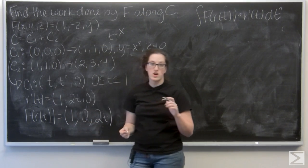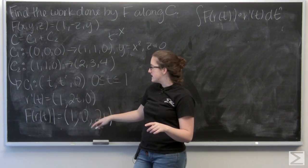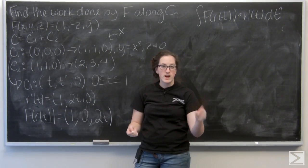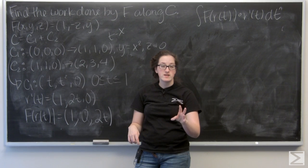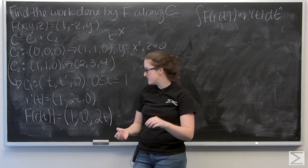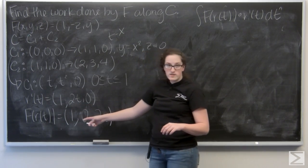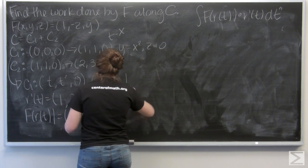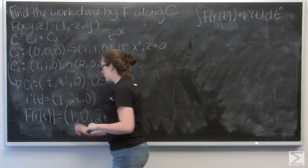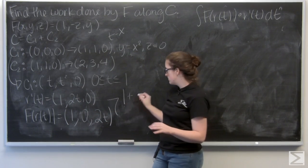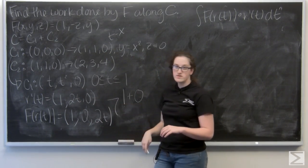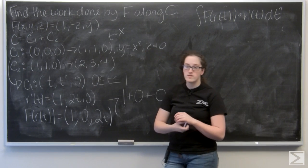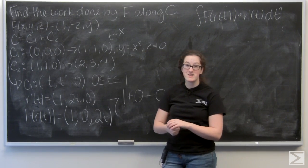Now, to calculate the line integral along c1, I need to take the dot product of f of r of t and r prime of t. So, remember, that is the product of the i components, plus the product of the j components, plus the product of the k components. So, here I have 1 times 1, so 1. And then, I have 0 times 2t, which is 0. Then, I have t squared times 0, which is 0 again. So, my dot product of f of r of t and r prime of t is actually just going to be 1.